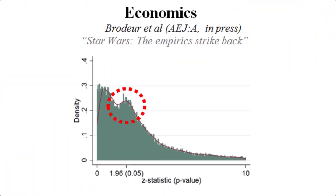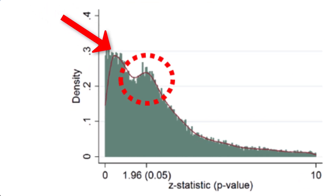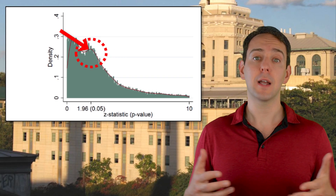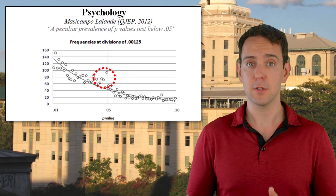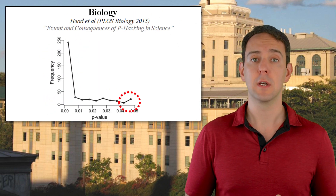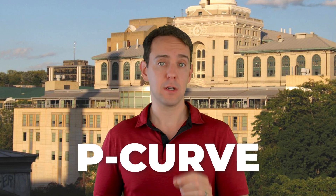Anyway, zooming in on economics, this graph shows how common a p-value is across a lot of published papers. The higher the data point, the more we see it. And as expected, if economists are p-hacking, we see a big spike right around 0.05. In other words, economists appear to be engaging in some form of p-hacking. The same is true for psychologists and also for biologists. But this is an aggregate result — what if I want to know if a single research paper has evidence of p-hacking? For that, we turn to the p-curve.